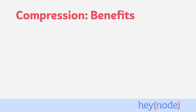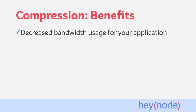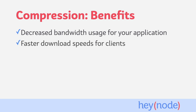There are two main benefits of using compression on your web server. The first benefit is decreased bandwidth usage for your application. Sending smaller payloads over the network makes your application use less bandwidth overall. That also means that users of your application will use less of their own bandwidth when interacting with it. Second, clients are able to download data from your application faster. Compressing resources sent to the client can reduce load times for responses and assets, because there is less data to download in the first place.